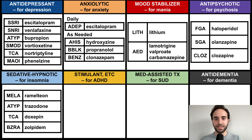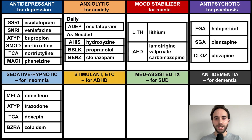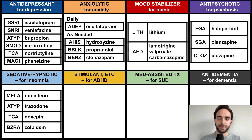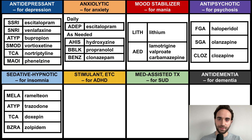Next are the sedative-hypnotics, a heterogeneous class of medications with various mechanisms of action that are used to promote sleep. These include the melatonin agonist ramelteon, trazodone (an atypical antidepressant), doxepin (a tricyclic antidepressant), and zolpidem, a benzoreceptor agonist.